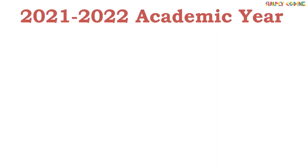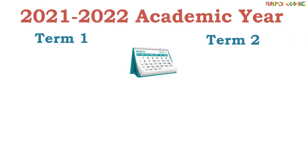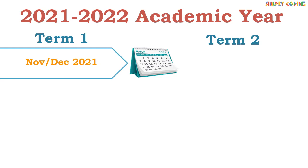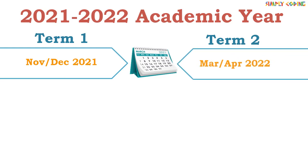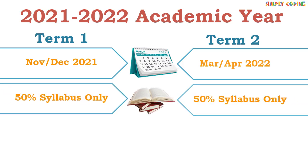Now let's look at academic year 2021–22 and how they have divided it into two terms. CBSE will conduct two exams: term 1 in the November–December 2021 timeframe and term 2 in the March–April 2022 timeframe. Both will cover 50% of the overall syllabus, and term 2 will not repeat any syllabus from term 1, so you do not have to study it again.